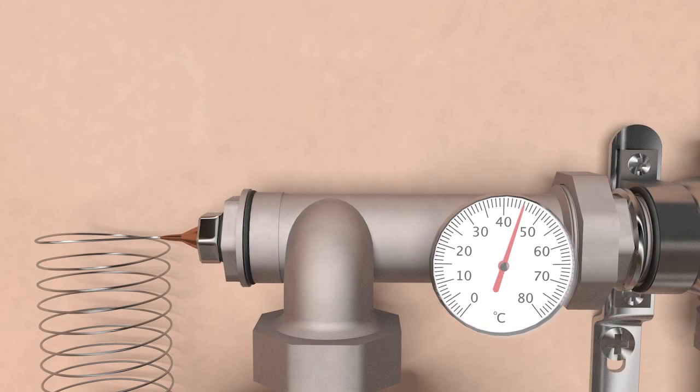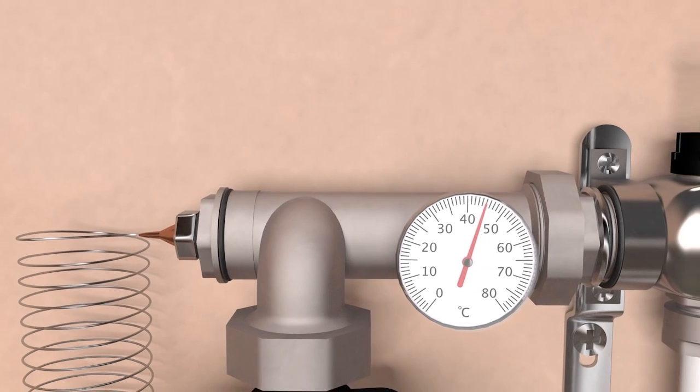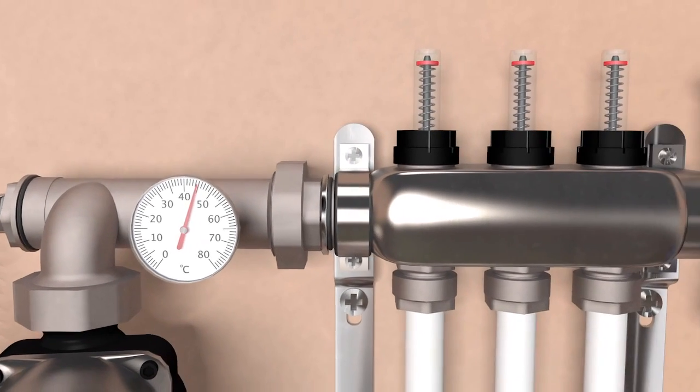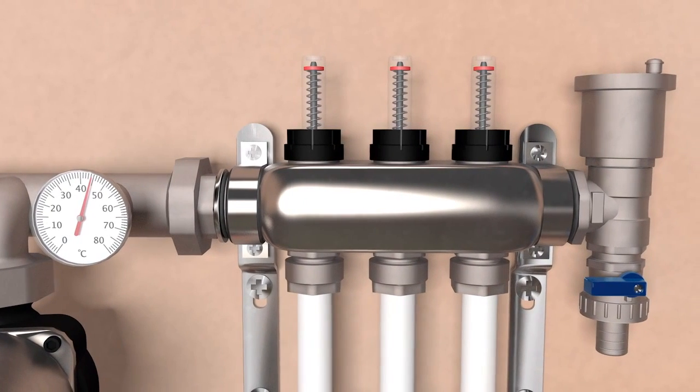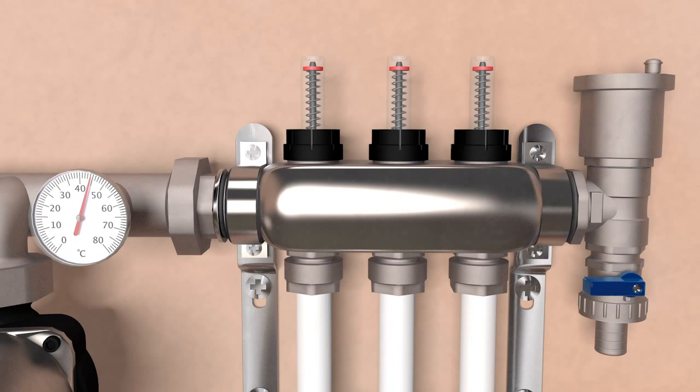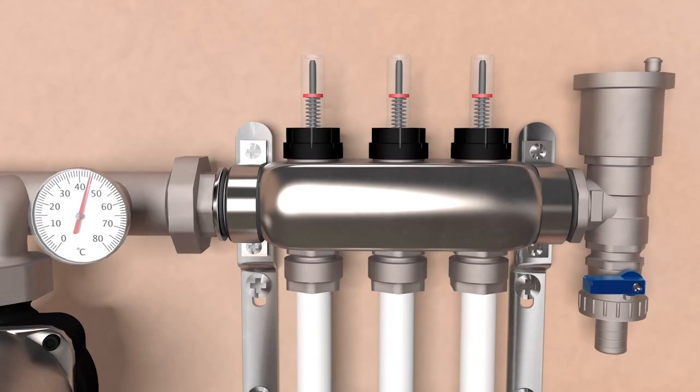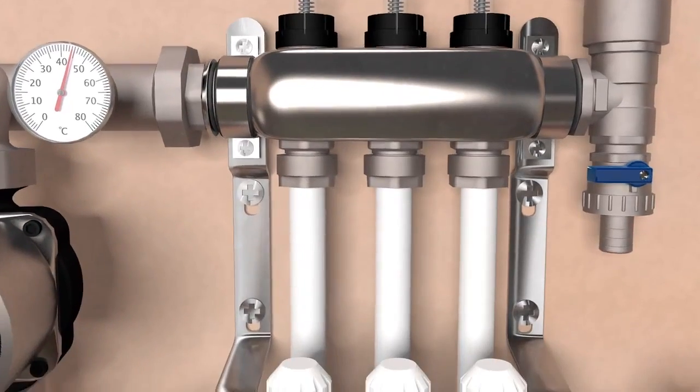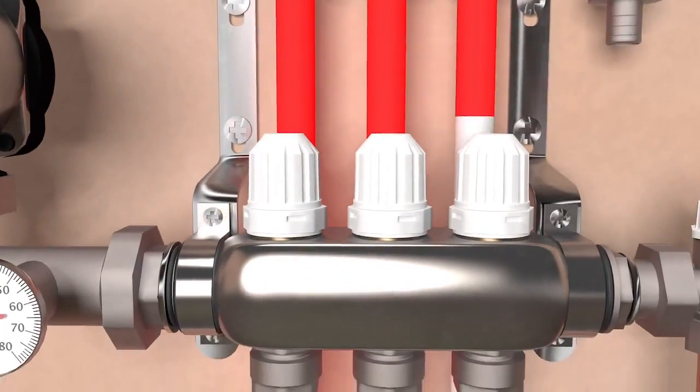The only direction the water can travel is up through the pump into the top manifold flow bar. Here the thermometer will give you an accurate reading of the water temperature going into your floor loops. Each pipe loop is regulated via a flow gauge. These flow gauges restrict or increase the flow of water going into each pipe loop. These are adjusted depending on the length of each individual pipe loop so that you have a balanced flow of water throughout your system.